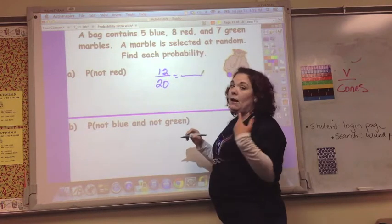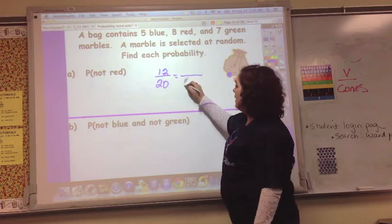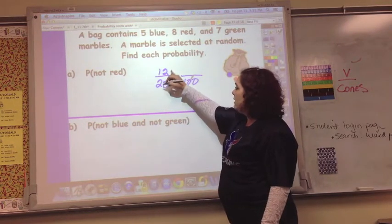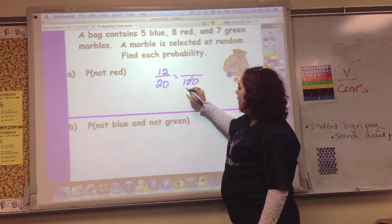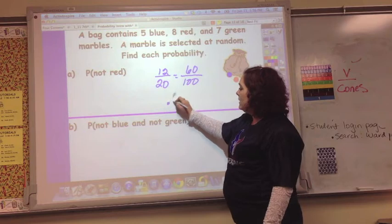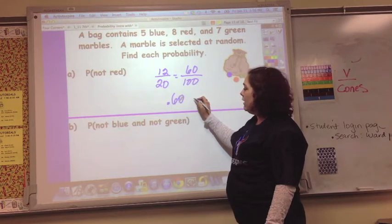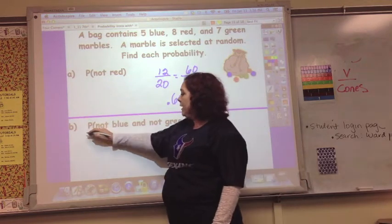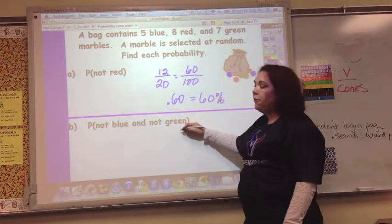Well, I could draw blue or green, and that adds up to 12 out of 20. And if I want to find out what that is as a decimal, I can go to 100, and 20 times 5 is 100, and 12 times 5 is 60, 60 hundredths. So that's 60 hundredths, or 60%.